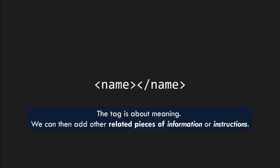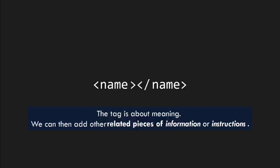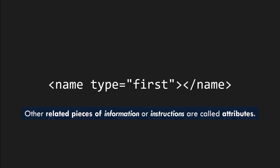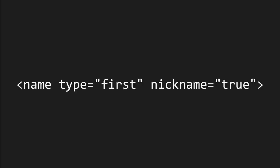In this markup language, I'm going to add the ability to add extra information. For example, I want to show that in this case I mean the first name. Other related pieces of information or instructions are called attributes. This is an attribute, and they're formatted always the same way: the attribute name, then an equal sign, then the value inside quotes. You can have more than one attribute. What I'm saying then is: what's between these tags is the name, it's a first name, and it's a nickname.